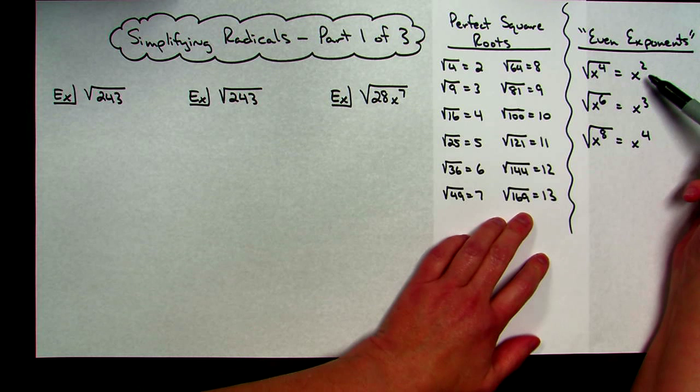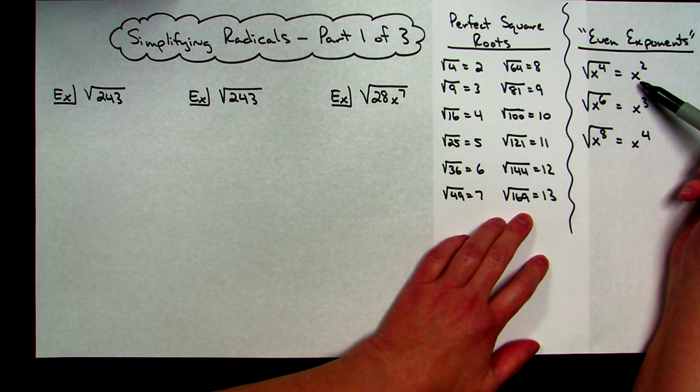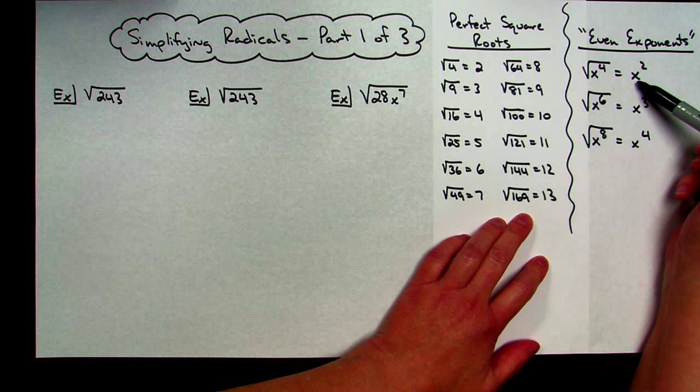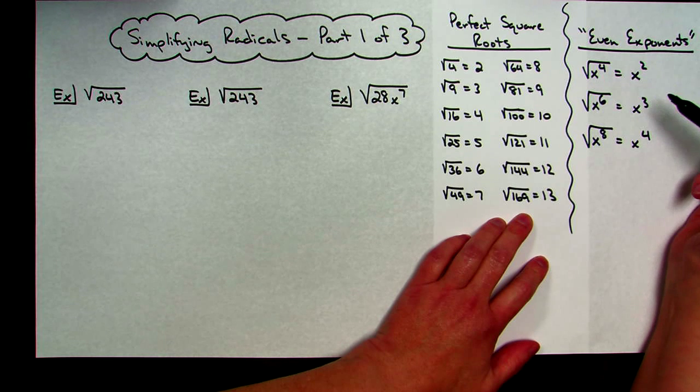Now I also have written over here, in case you're not aware of this, square root of x to the fourth, anytime I have an even exponent, it's just going to be x to the second. It will always be half of that exponent.